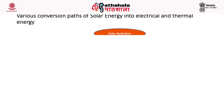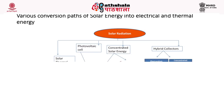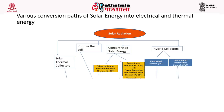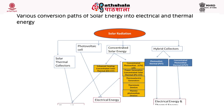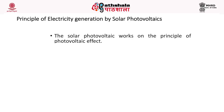This flow diagram shows the various conversion paths of solar energy into electrical and thermal energy. Solar radiation is directly used by solar thermal collectors for the production of thermal energy. If we use a photovoltaic cell, it is converted to electrical energy. There are concentrated solar energy systems that produce thermal as well as electrical energies, and some hybrid collectors — photovoltaic thermal and concentrated photovoltaic thermal — which can produce both electrical and thermal energies. So let's see the principle of electricity generation by solar photovoltaics.